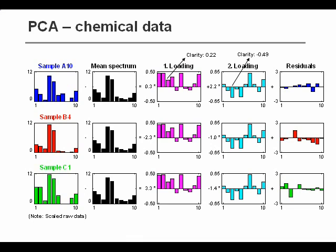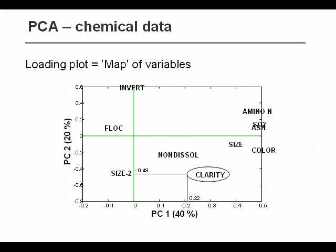And you can see that, for example, two of the components, the clarity has a loading of 0.22 and minus 0.49. And if we plot that in the loading plot for all the variables, then we get a plot of the relation between the different variables.